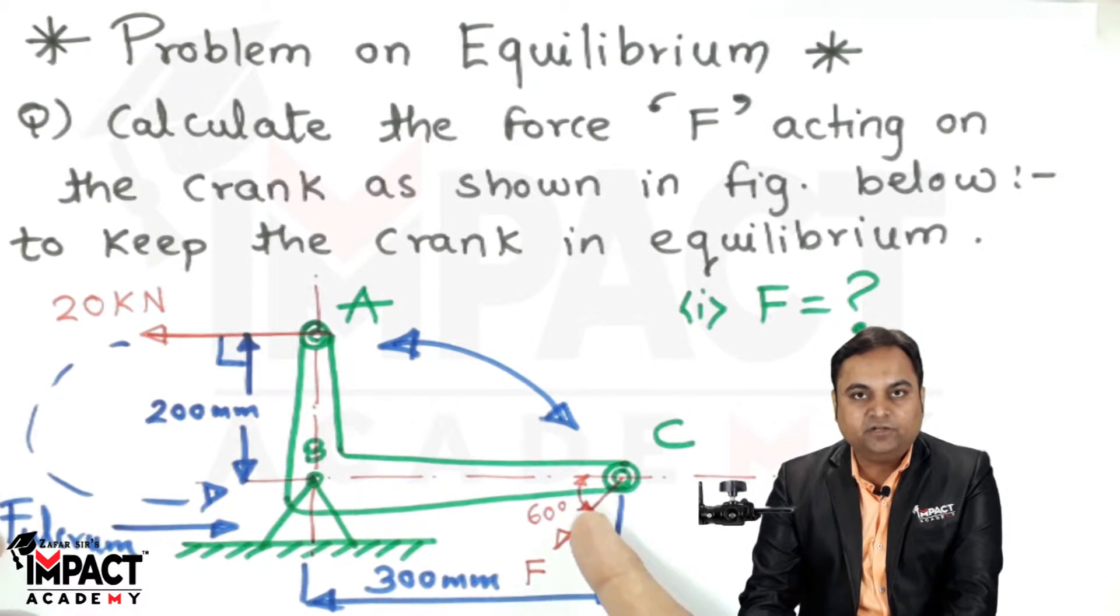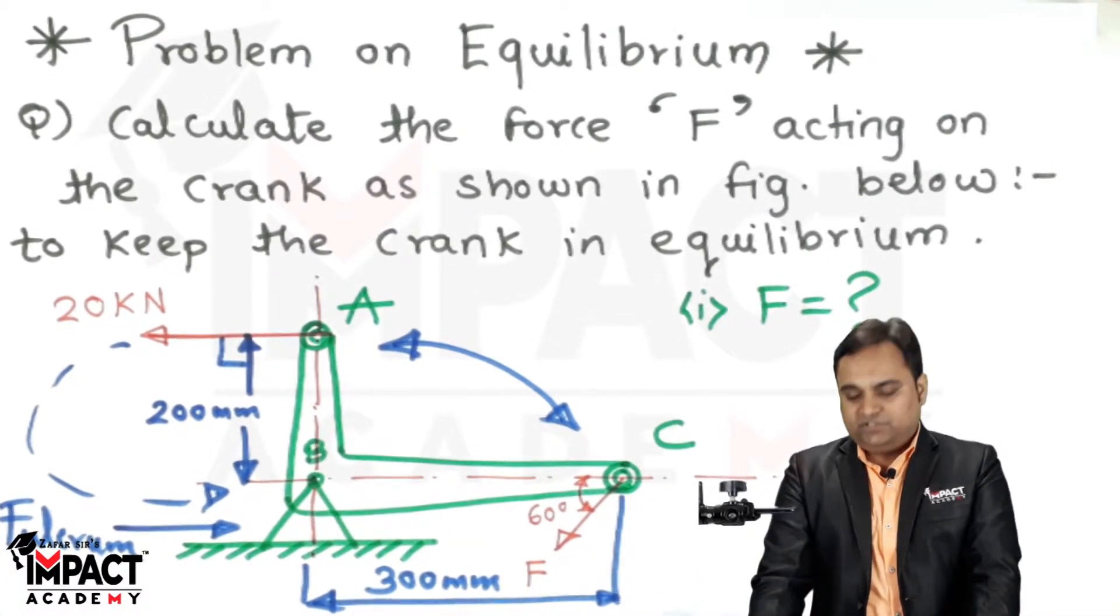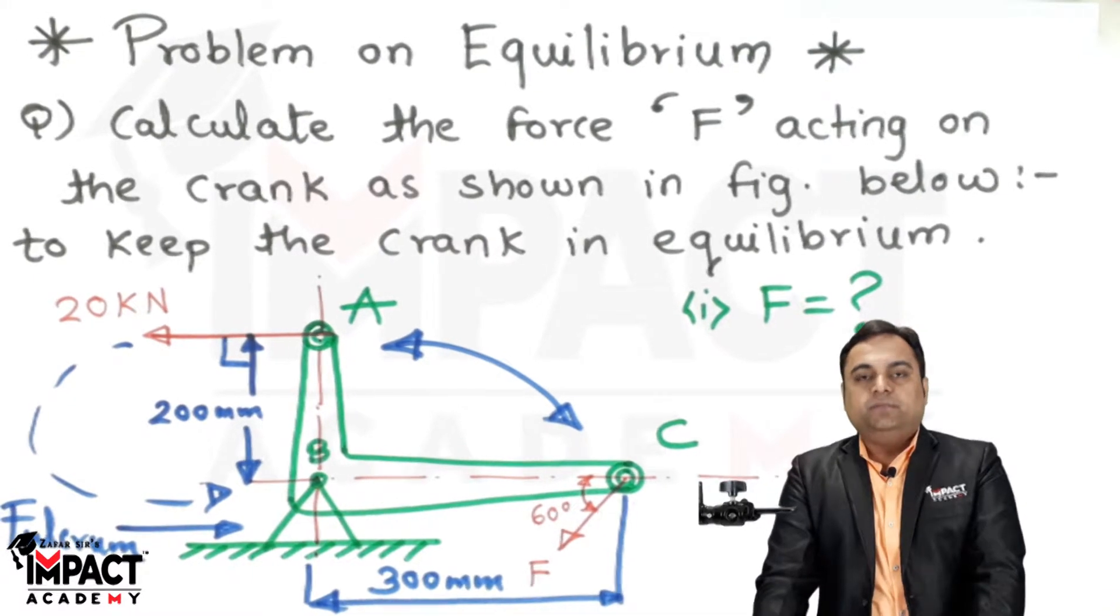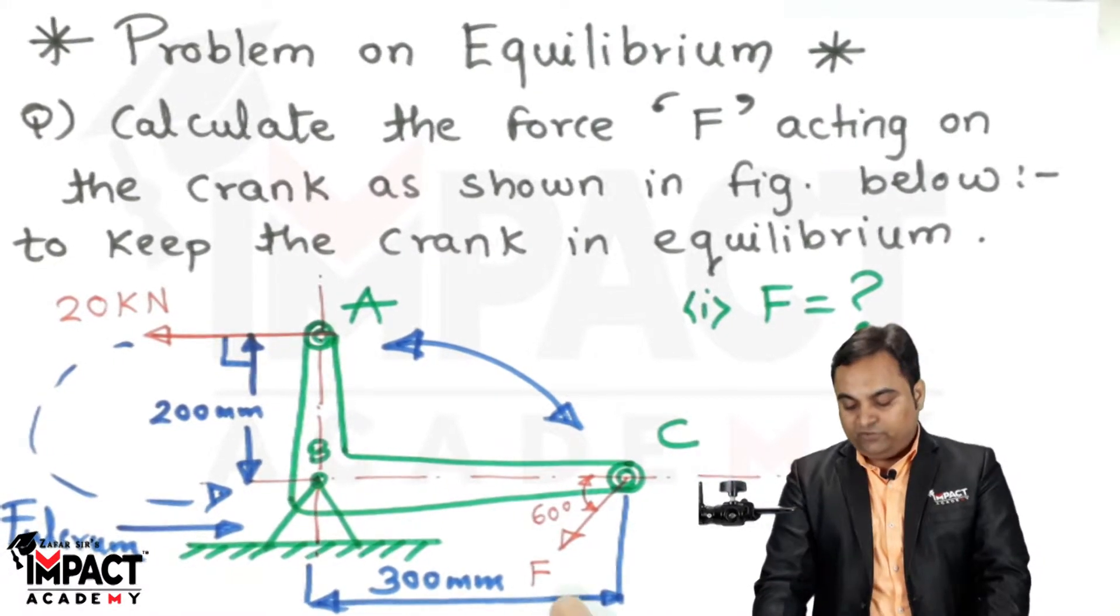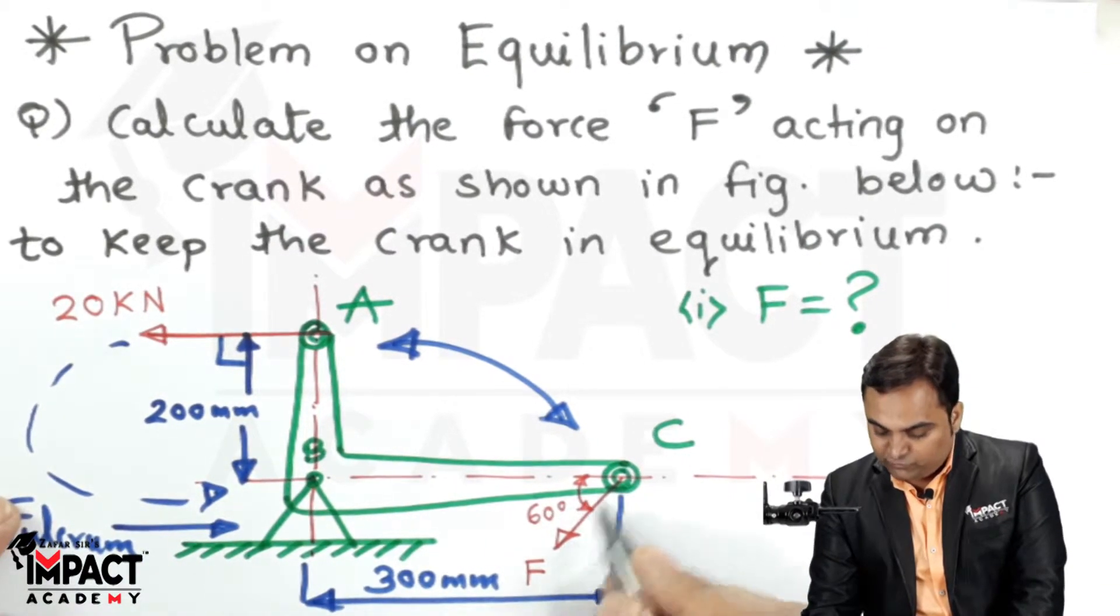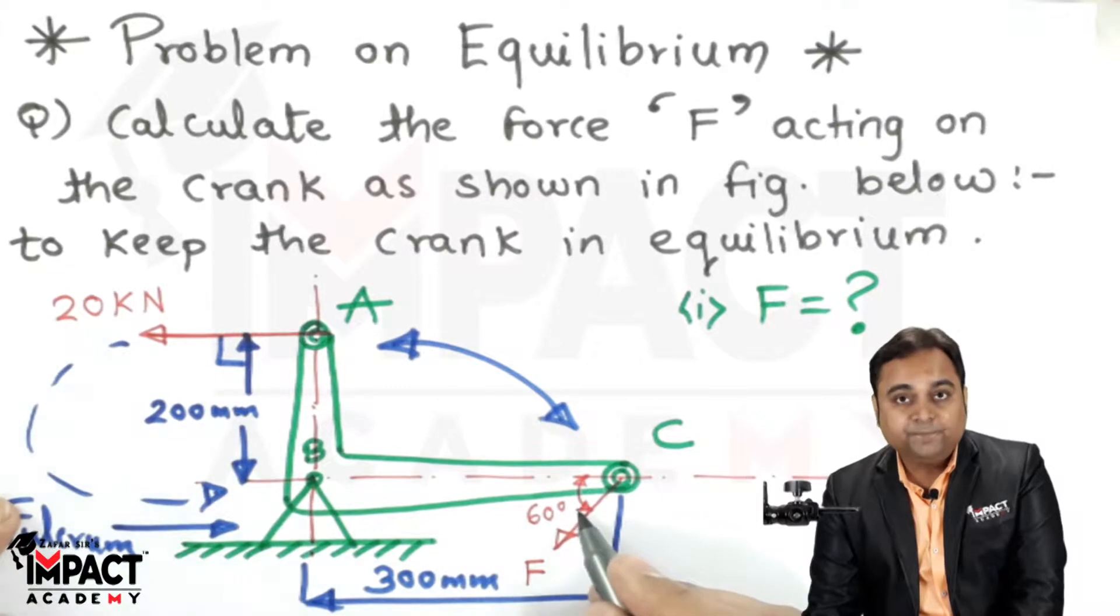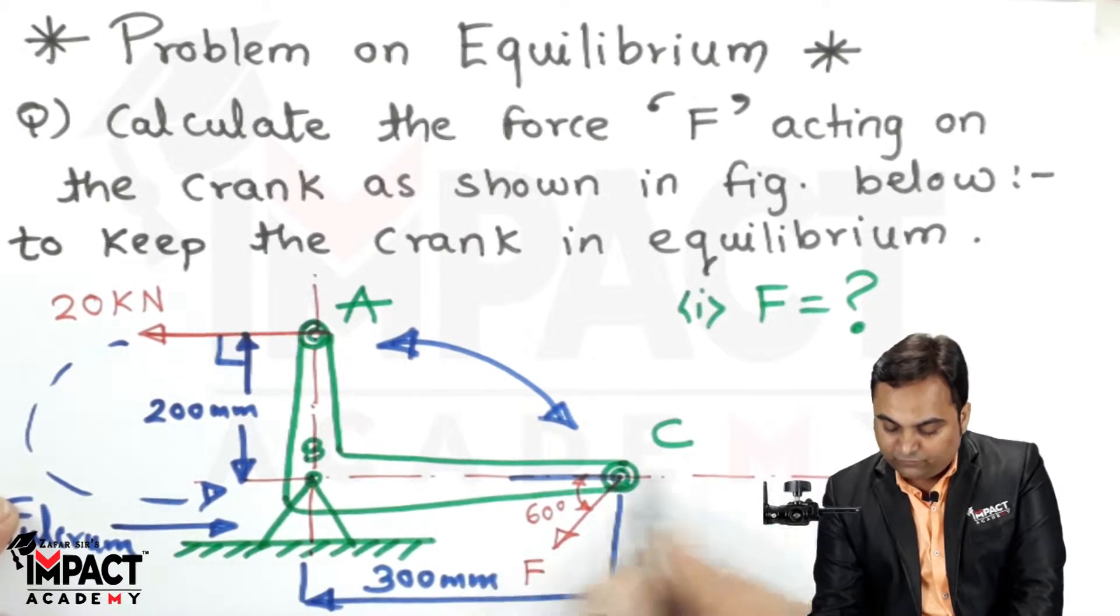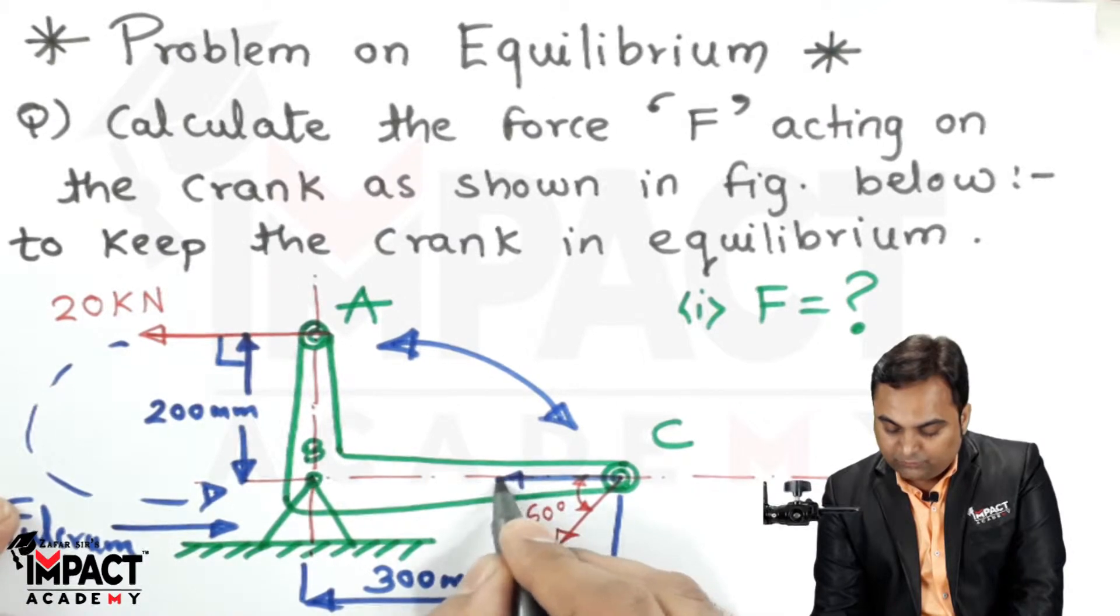Remember, in mechanics, whenever we have inclined forces, try to resolve them first. Here, the force F is inclined at 60 degrees with respect to the horizontal, so there would be two components for this force: one is the horizontal component and one is the vertical component.